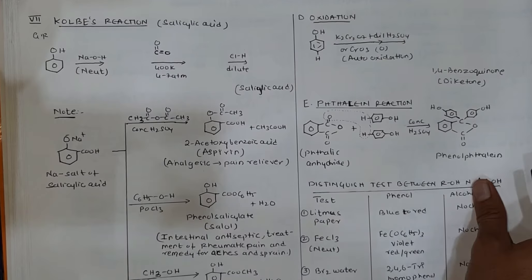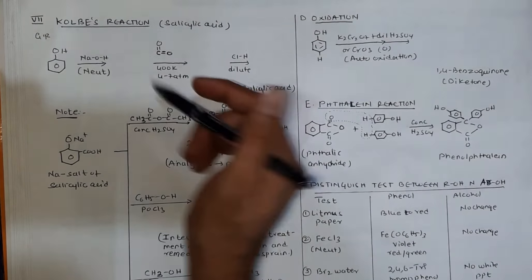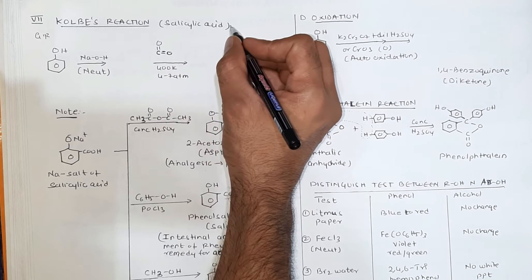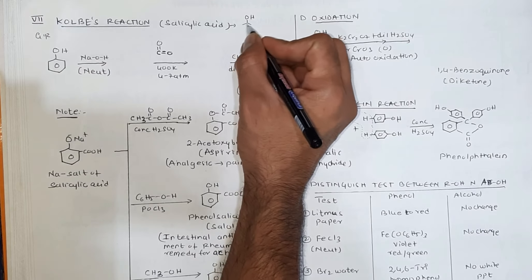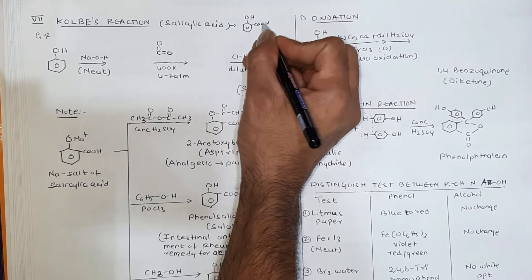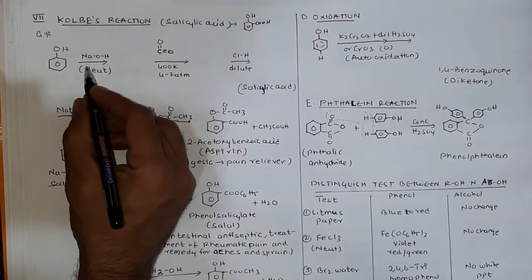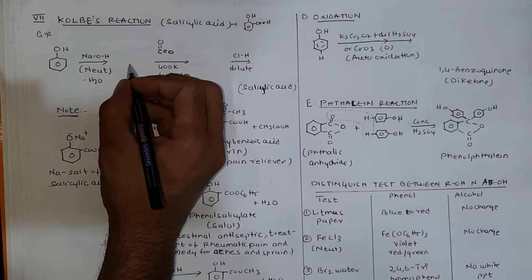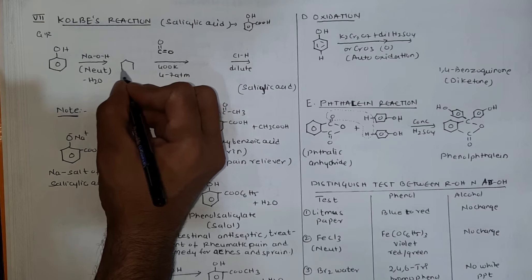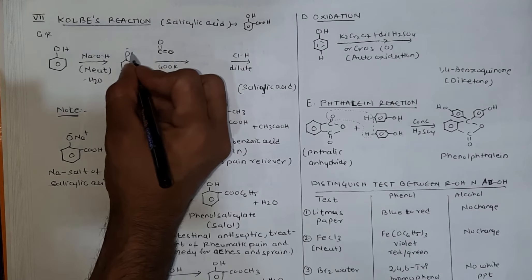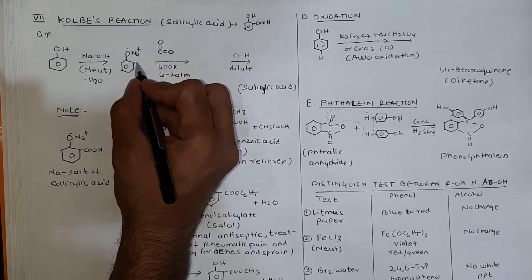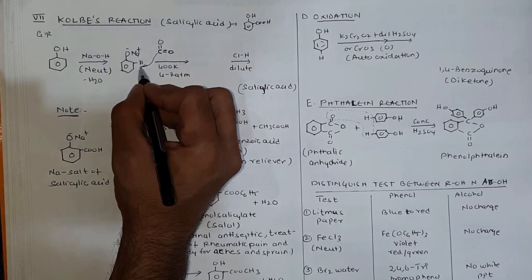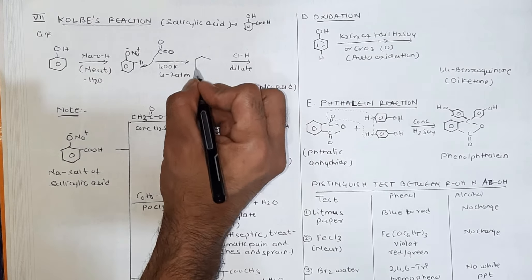The next name reaction is Kolbe's reaction, which is used to prepare salicylic acid, 2-hydroxybenzoic acid.